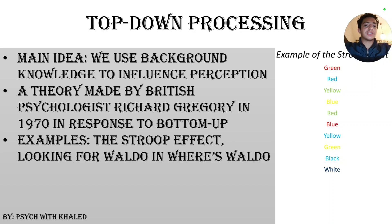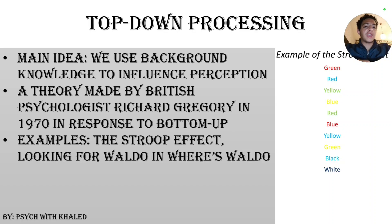Moving on to top-down processing. The main idea is that we use background knowledge to influence perception. This is totally different from bottom-up processing. With top-down processing, we use background knowledge, which can consist of emotions, motivations, expectations, memories — lots of things — and these influence perception.